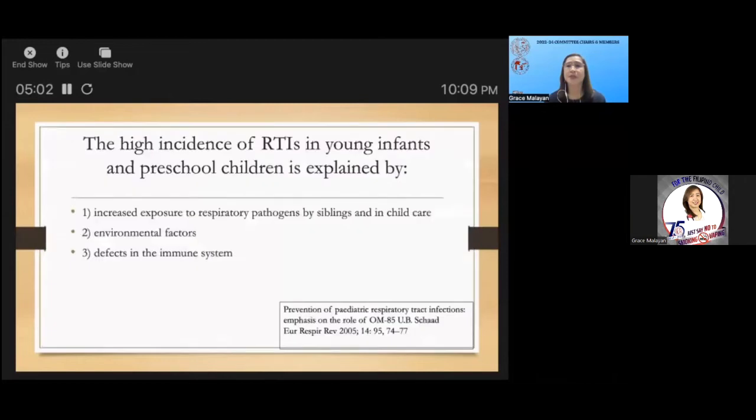In the Philippines, the number one cause of death in children under five is neonatal preterm birth, followed by lower respiratory infections. The high incidence of RTI in young infants and preschool children is explained by increased exposure to respiratory pathogens by siblings and in child care, environmental factors, and defects in the immune system.